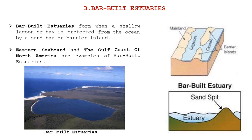In bar-built estuaries, the water surface area is very small. The temperature of the water does not change much — it is generally steady, with the same temperature throughout each part of the surface area, because the sand spit is present and the surface area of the water is very limited.